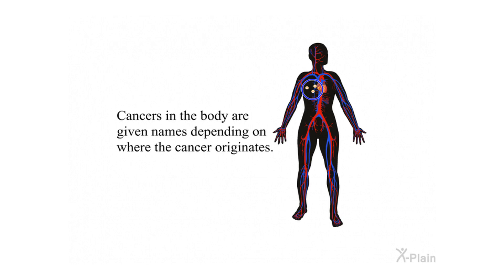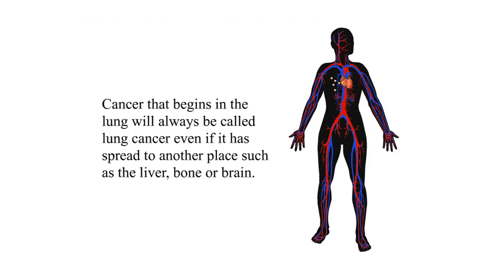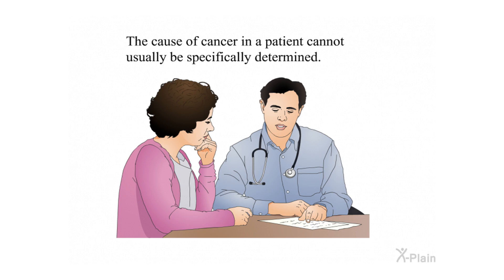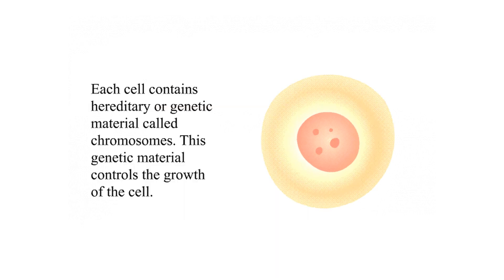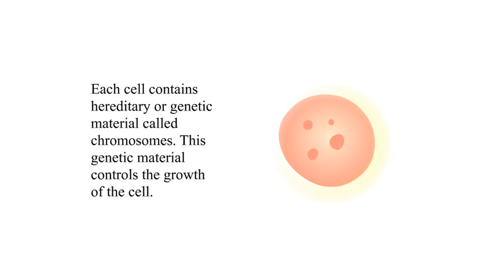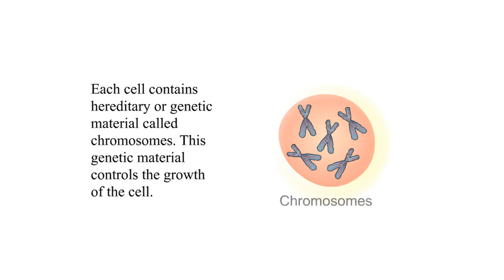Cancers in the body are given names depending on where the cancer originates. Cancer that begins in the lung will always be called lung cancer, even if it has spread to another place such as the liver, bone, or brain. The cause of cancer in a patient cannot usually be specifically determined. Each cell contains hereditary genetic material called chromosomes, which controls the growth of the cell.